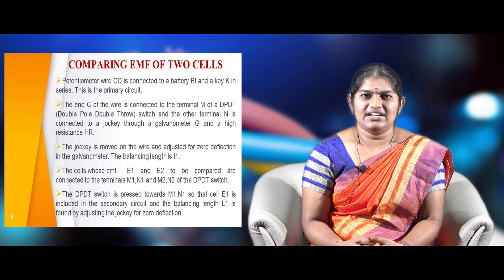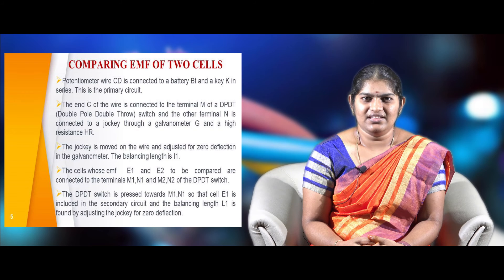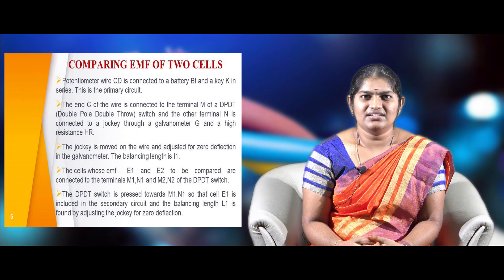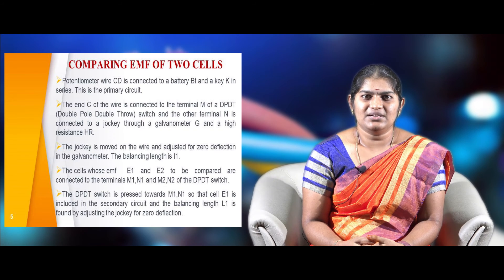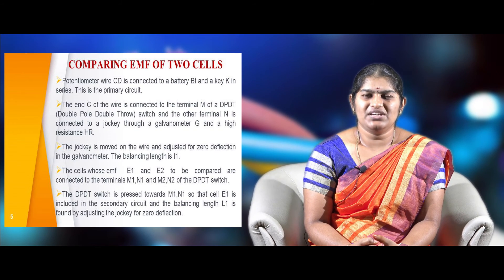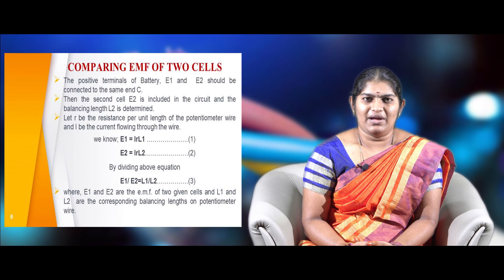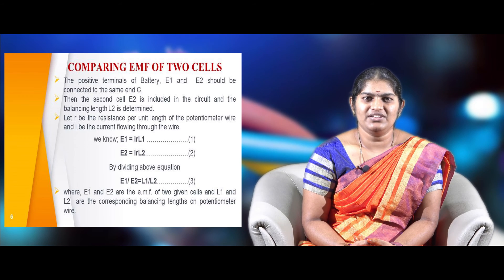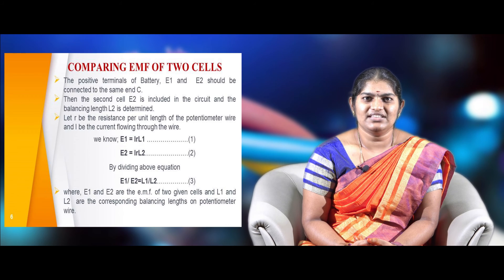The potentiometer wire CD is connected to a battery BT and key K in series, forming the primary circuit. The end C of the wire is connected to the terminal M of a DPDT (double-pole double-throw) switch, and the other terminal M is connected to a jockey through galvanometer G and high resistance HR. The jockey is moved on the wire and adjusted for zero deflection in the galvanometer; the balancing length is then L1. The positive terminals of battery BT and cells E1 and E2 are connected at the same end point C. Then the second cell E2 is included in the circuit and the balancing length L2 is determined.